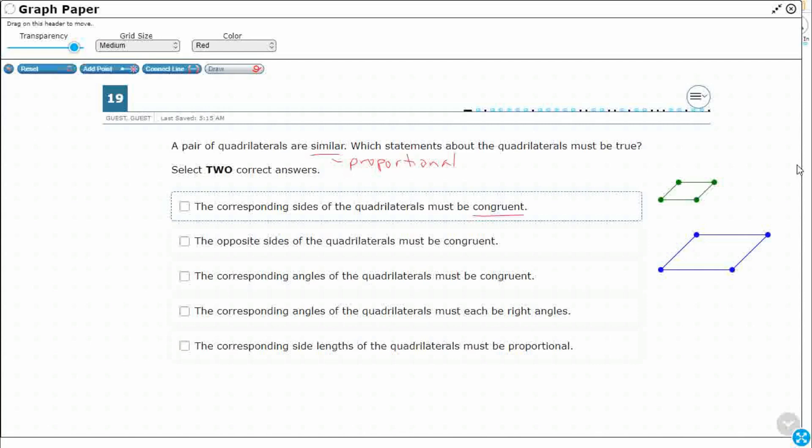So if similar squares, similar rectangles, I just chose parallelograms because it's a quadrilateral. We don't know what type of quadrilateral they are. If they're proportional, that means they're the same shape, and their sides are proportional, but they're not always going to be the exact same size. That's what congruent means. So this is exact. This is the same size, same shape. They're identical, basically.